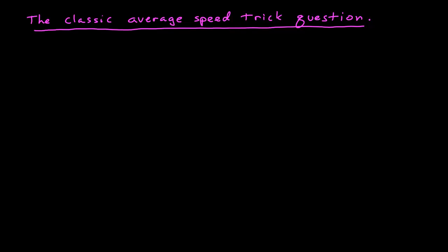In the last module, we looked at the difference between average velocity and average speed. And while it seems straightforward, we found that if you simply rely on your intuition instead of the exact definition of these terms, it can lead you into problems. And so here I'd like to just do a single example. This I call the classic average speed trick question.